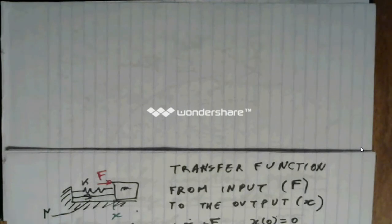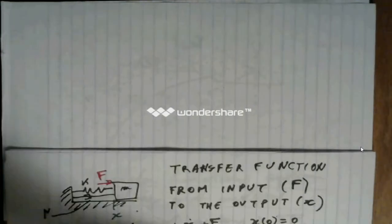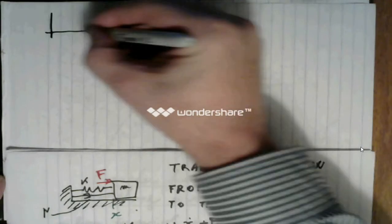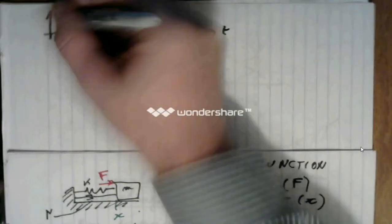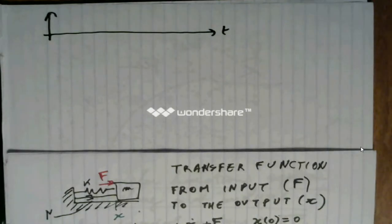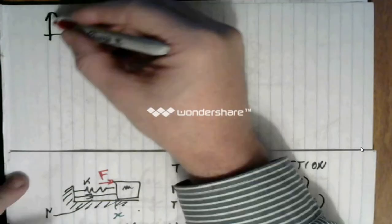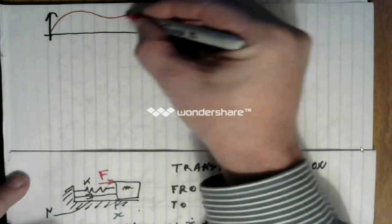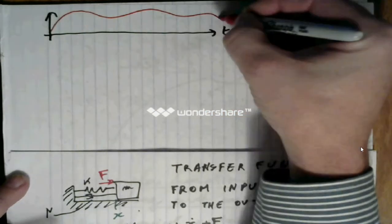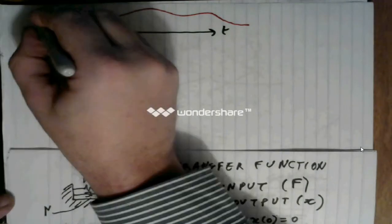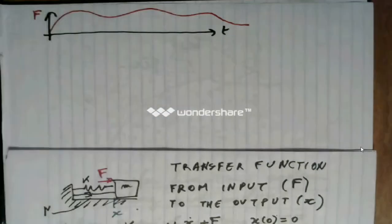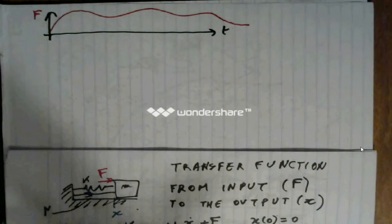It takes an input f, which I will draw here, that starts at time is equal to zero. And then, note that f could be anything. And then, the system reacts to it.